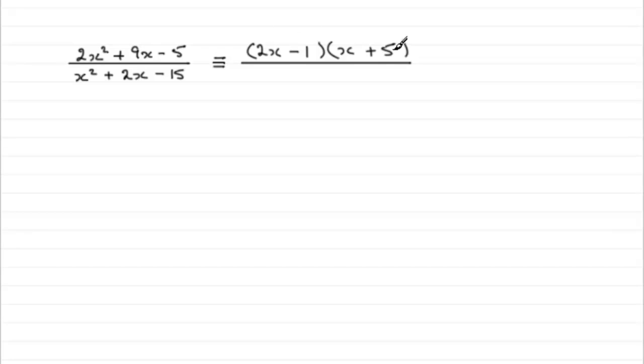So we get 10x minus x, which is 9x, and then minus 1 times 5 gives us the minus 5. And I would expect that when I factorize the bottom, I'm anticipating that I'm going to see one of these factors here. Well, clearly it's not going to be that one because there's no 2x in the x squared, but it's likely to be the x plus 5. So it gives me a bit of a clue anyway when factorizing this.